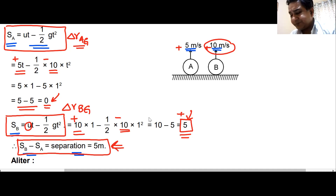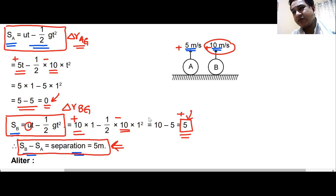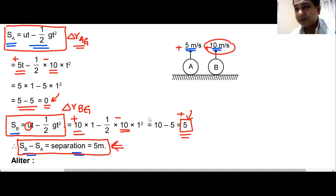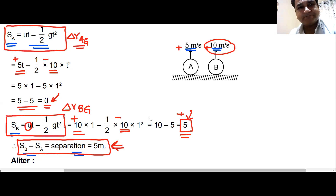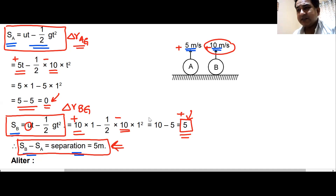But my question is: is there a nicer, smarter way? You can see you have to do a lot of calculations here — put the formula for displacement of A w.r.t. ground, get the answer, then put the formula for B w.r.t. ground, get that answer, then subtract. Is there a different, smarter and faster way of doing it?